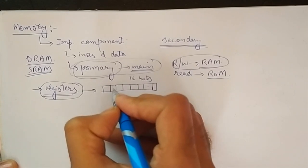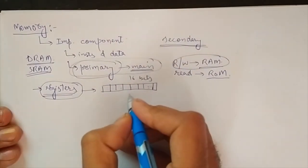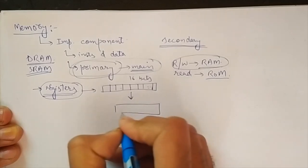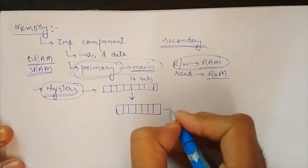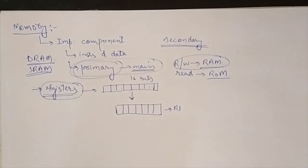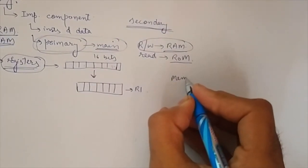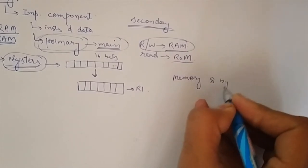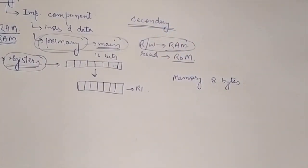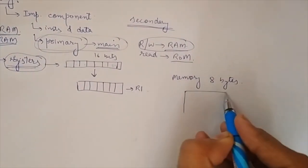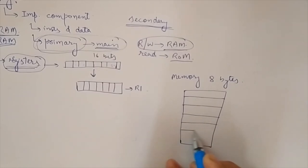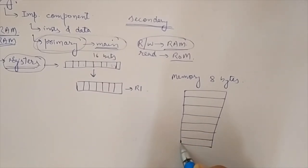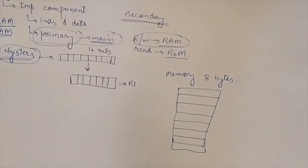Let's say we have registers and each register is storing an 8-bit quantity. So this is register 1. Let's say we have a memory of 8 bytes. If it is a memory of 8 bytes, then there are 8 registers in this particular memory. So we can say this memory is made of 8 registers: 1, 2, 3, 4, 5, 6, 7, and 8. And every register has an address: 0, 1, 2, 3, 4, 5, 6, and 7.